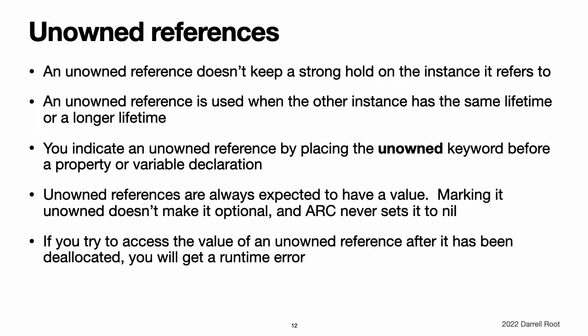Unowned References. Like a weak reference, an unowned reference does not keep a strong hold on the instance it refers to. Unlike a weak reference, however, an unowned reference is used when the other instance has the same lifetime or a longer lifetime. You indicate an unowned reference by placing the unowned keyword before a property or variable declaration. Unlike a weak reference, an unowned reference is expected to always have a value. As a result, marking a value as unowned does not make it optional, and ARC never sets the unowned reference's value to nil. If you try to access the value of an unowned reference after that instance has been deallocated, you will trigger a runtime error.